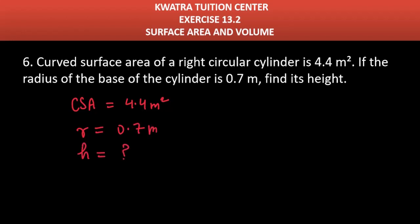So which formula should you use? You have to use the CSA formula because what you have mentioned here is that CSA is 4.4. So what is CSA formula? It is 2πrh and it will be equal to 4.4. So let it be equal to 4.4.